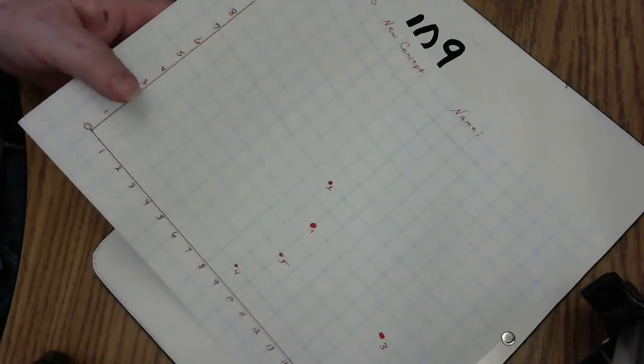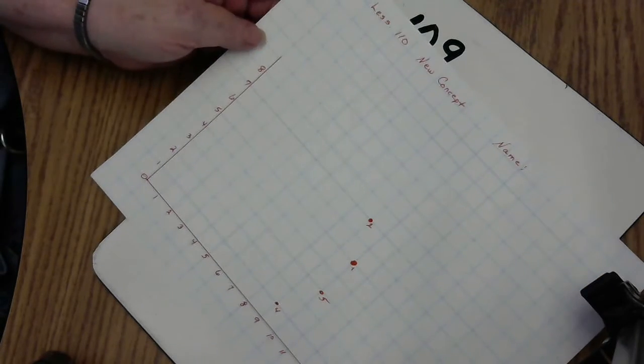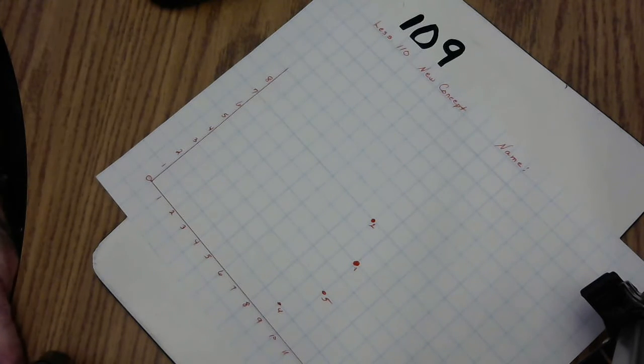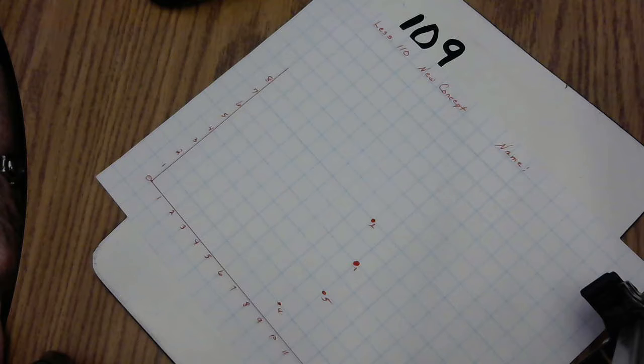On lesson 109, the name of it is Points on a Grid. So if you would turn to page 578, we'll get started on the new concept. It says if we number the lines on a grid, we can name any point on the grid with two numbers. I have a grid paper in your packet that goes along with lesson 110, but you can be looking at it right now for 109 also.